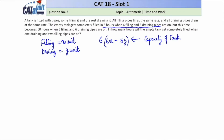The second condition tells us this time becomes 60 hours when five filling and six draining pipes are on. Five filling pipes do 5X units of work and six draining pipes do 6Y units of work. This system takes 60 hours to fill the tank, so the capacity is also 60(5X − 6Y).